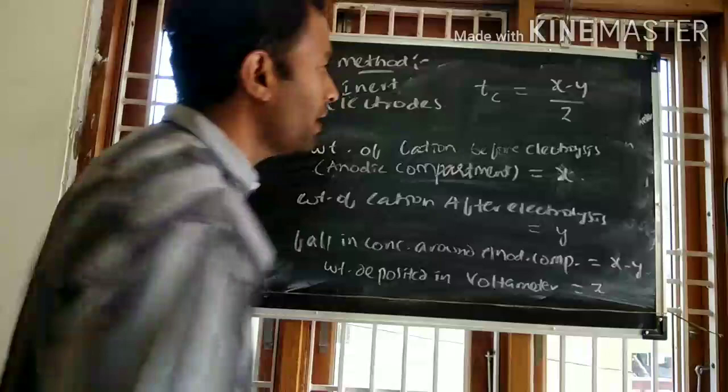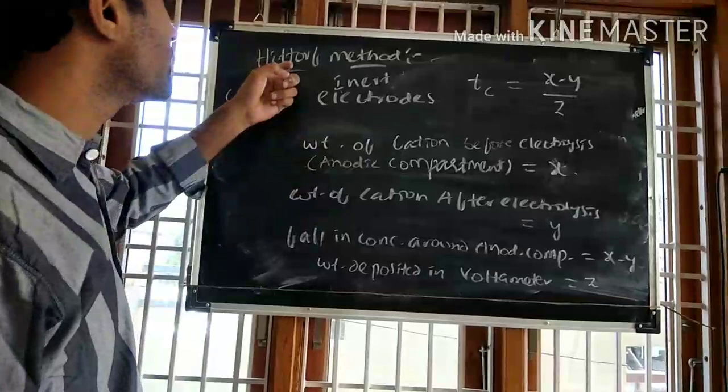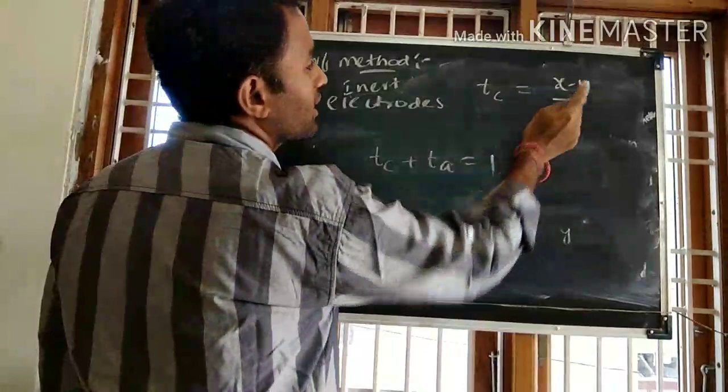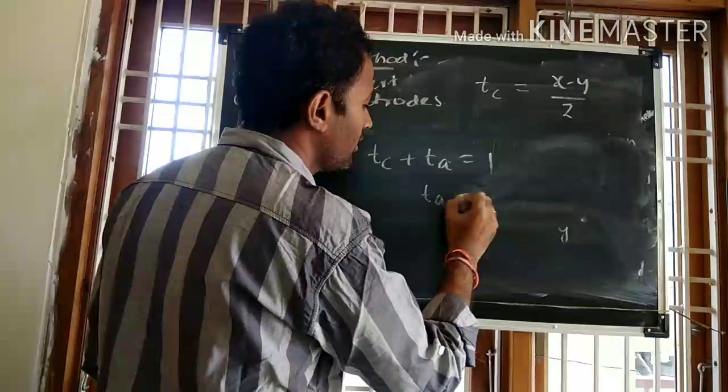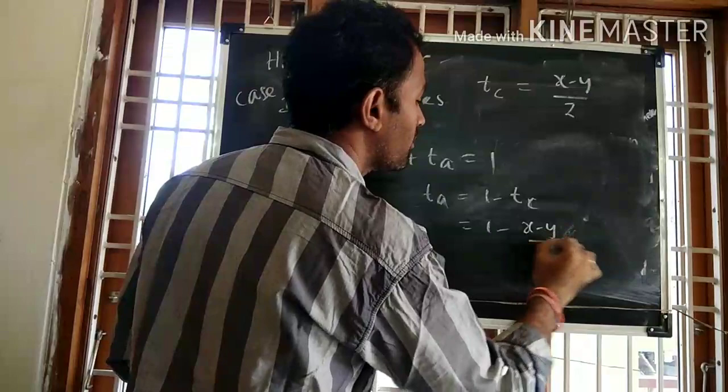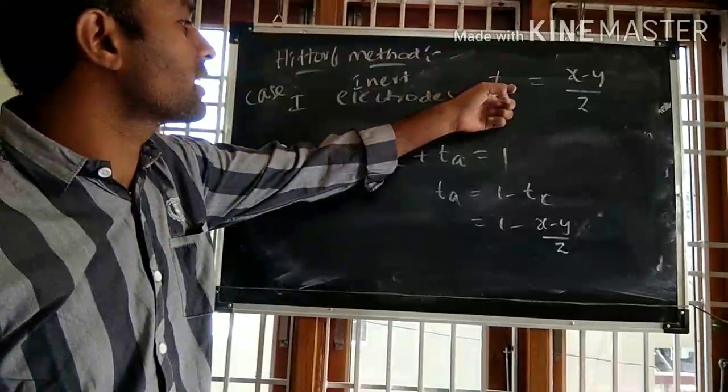In this way we can calculate the transport number of the cation using the Hittorf method. Once we know the transport number of the cation, we can calculate the transport number of the other ion using the equation: 1 minus (x minus y) divided by z. This applies to Case 1, where inert electrodes are used.